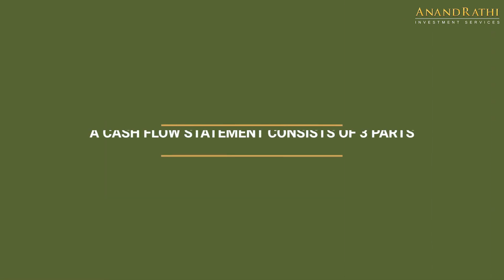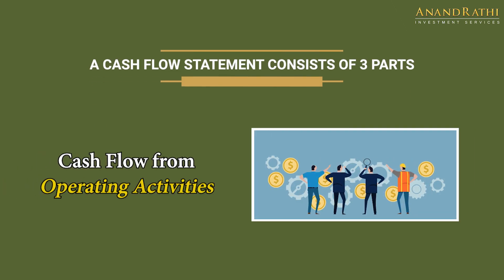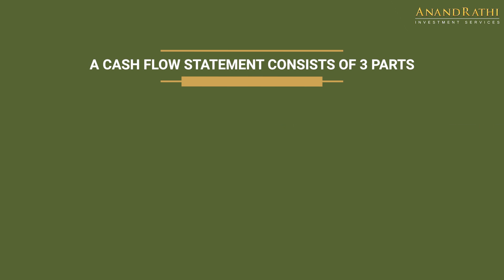A cash flow statement mainly consists of three parts: the first part is cash from operating activities, the second part is cash from investing activities, and the third part is cash from financing activities. Let us briefly discuss what these individual three parts contain and what insights they offer for investors.